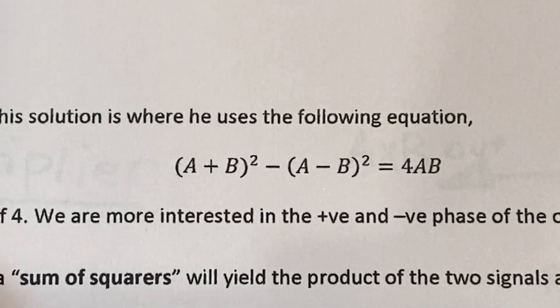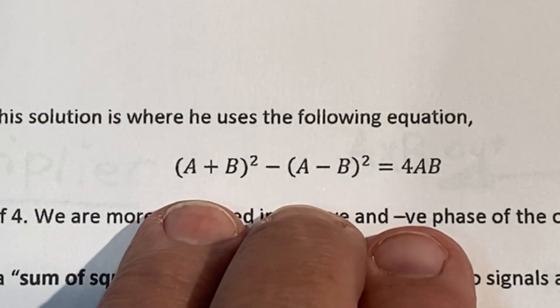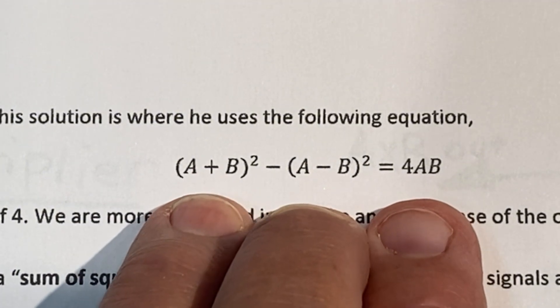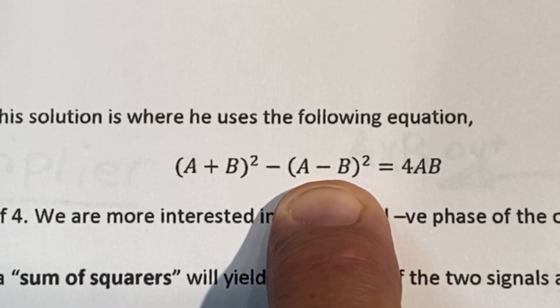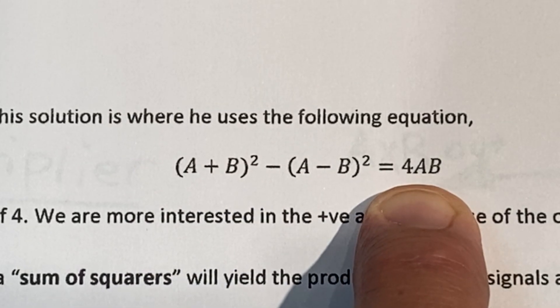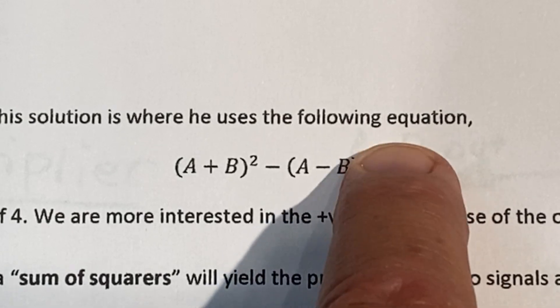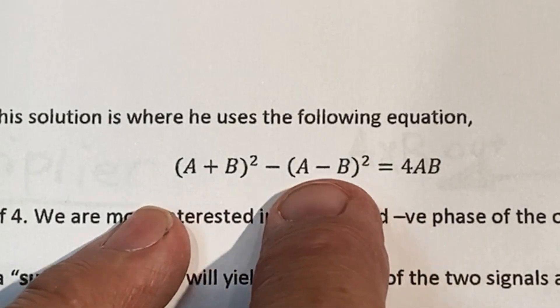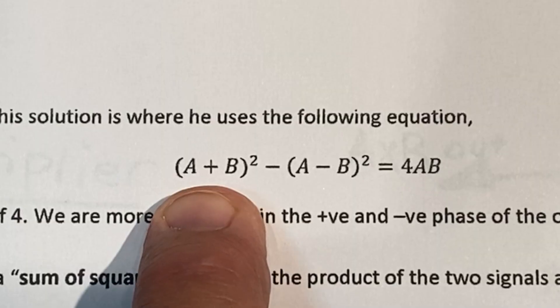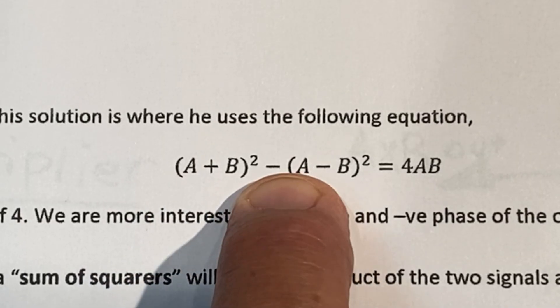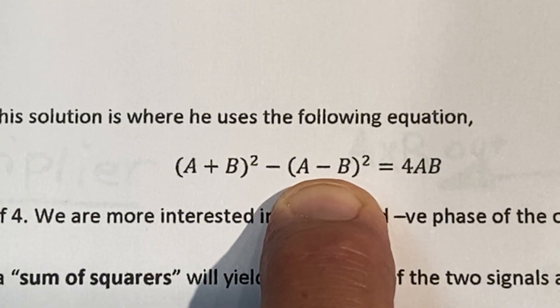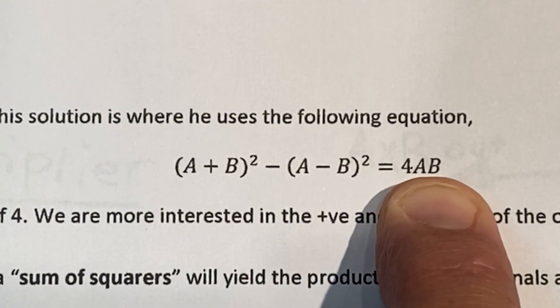All right. So the clever part of his solution is he takes a look at this equation. A plus b squared minus a minus b squared equals 4ab. And we can just, we can ignore that number four there. And just consider the fact that I have the sum of two things squared minus the difference of the same two things squared, and I wind up getting the product.